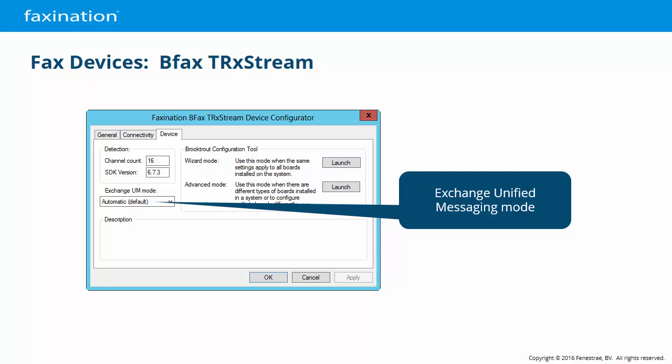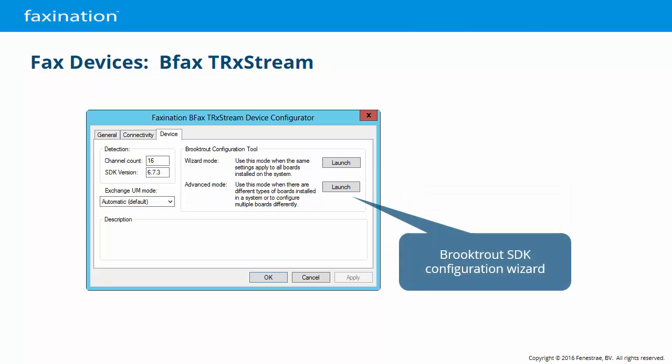The only options here are automatic and disabled. You can launch the Brooktrout Configurator tool from here — the tool is part of the Brooktrout SDK. Typically, you just use the wizard mode if you want to adjust the line configuration, set up hardware fax over IP, or set up the software-based fax over IP SR140 when there is no fax card present. The advanced mode is used when multiple cards are installed in the system and they need to be configured independently.